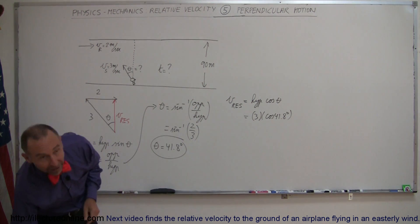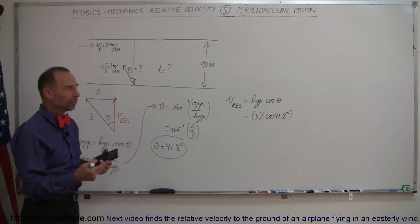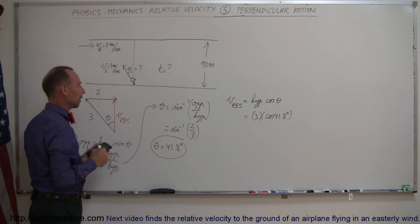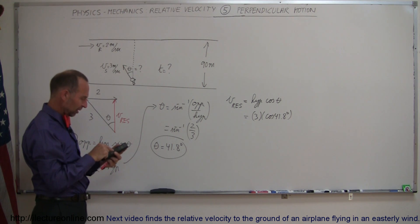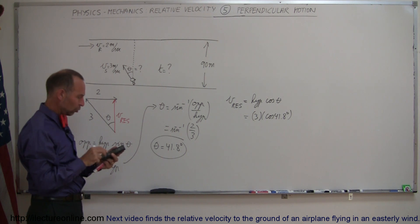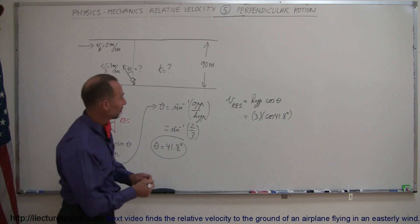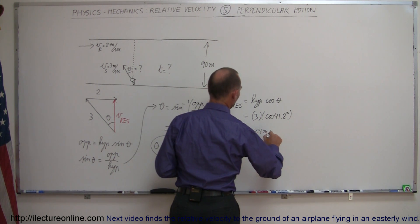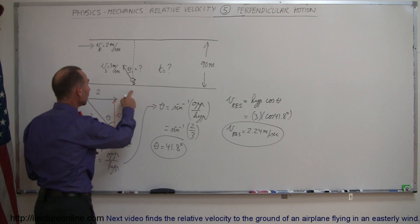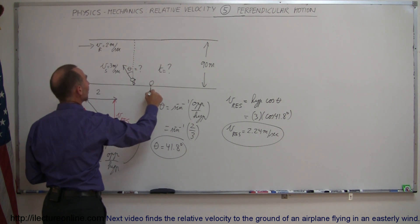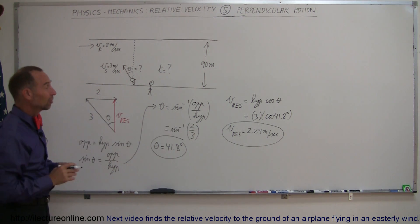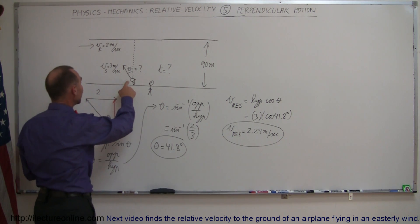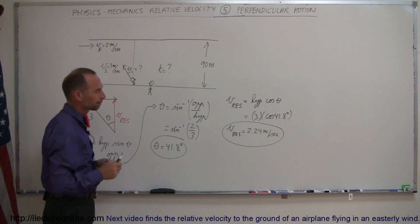Alright, so let's see how fast the equivalent or effective or apparent velocity is of the swimmer going across the river. So we take the cosine of that number, multiply times 3, and we get 2.24 meters per second. So the resultant velocity is equal to 2.24 meters per second. So that would be the relative velocity of the swimmer swimming across the river. For someone standing on the side of the river, watching this whole event take place, that swimmer would appear to be moving at that speed. When in actuality, relative to the water, he's moving at 3 meters per second.